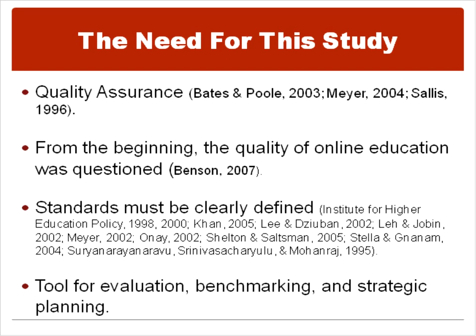There are rubrics for online courses, such as the Quality Matters rubric, but not a rubric or a scorecard for an online education program that is clearly defined by standards. Assurance of quality was a concern from the very beginning, with many believing that online teaching and learning was suspect. Yet the projected growth is not slacking off any time soon. Online education administrators need tools and guidance for assessing their programs to make sure they are meeting standards, because we owe that to our students.